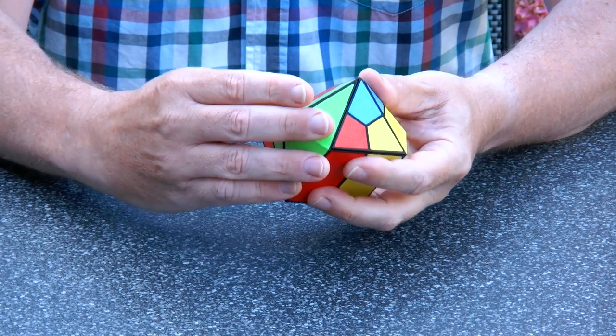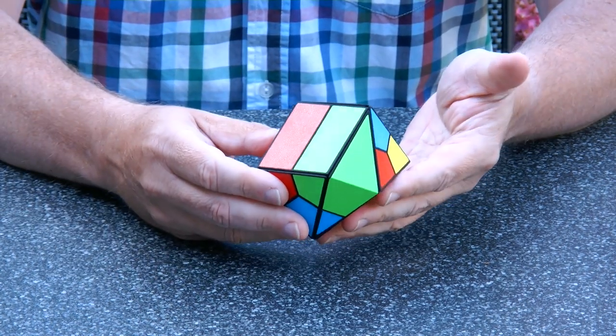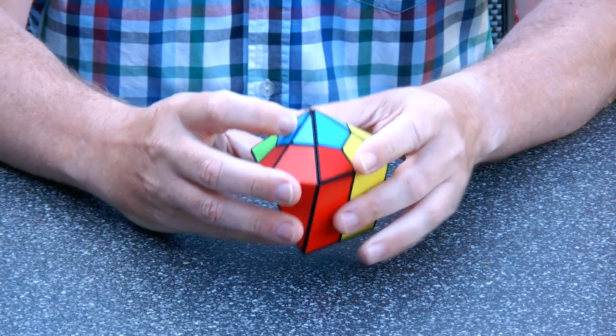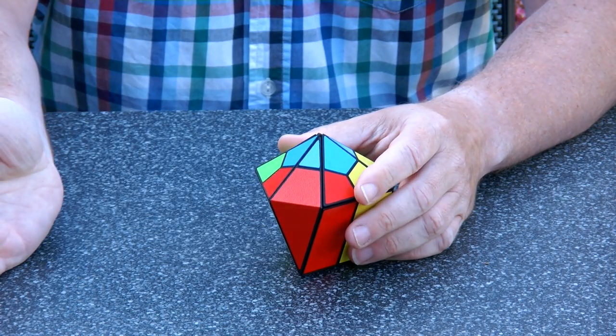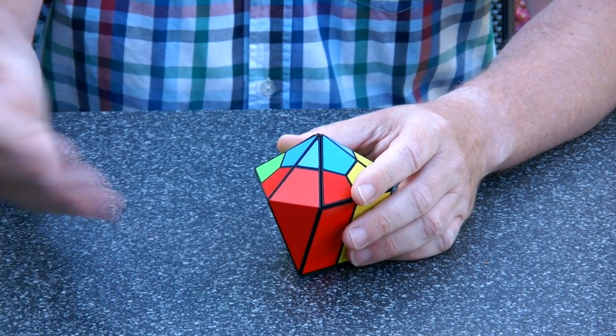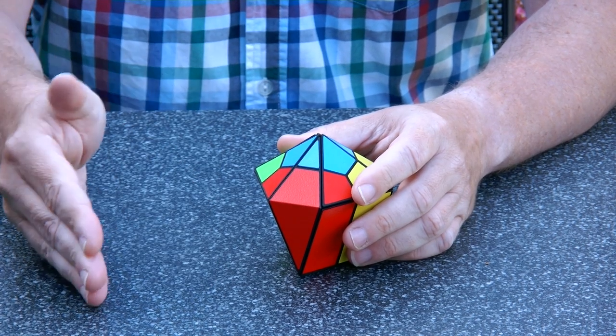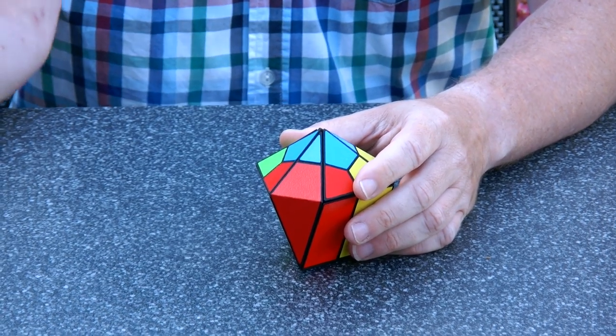And the other principal state or canonical state is the right-handed state. So you can go from mushroom to right to mushroom. Or from mushroom to left to mushroom. Or from mushroom to right to left to right to left to mushroom.